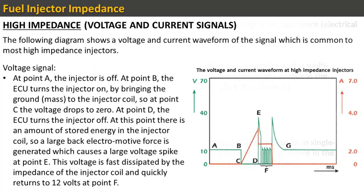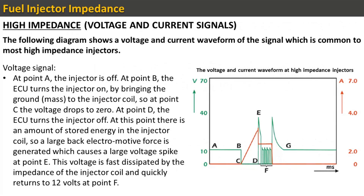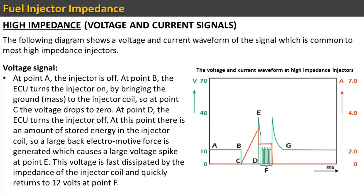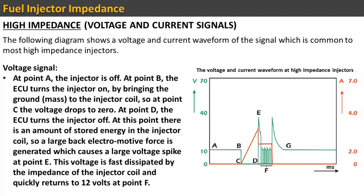The following diagram shows a voltage and current waveform of the signal common to most high impedance injectors. Voltage signal: At point A the injector is off. At point B the ECU turns the injector on by bringing the ground to the injector coil, so at point C the voltage drops to 0. At point D the ECU turns the injector off. At this point there is stored energy in the injector coil, so a large back electromotive force is generated, causing a large voltage spike at point E. This voltage is fast dissipated by the impedance of the injector coil and quickly returns to 12 volts at point F.